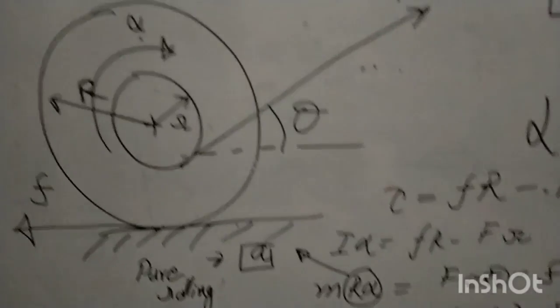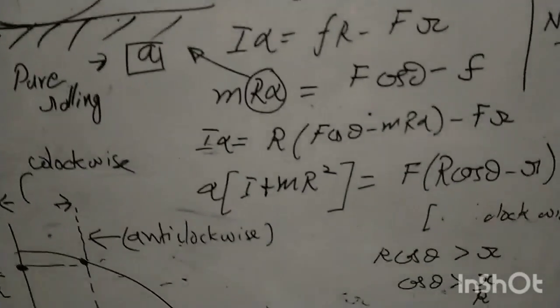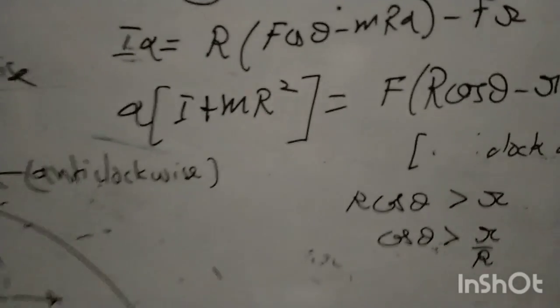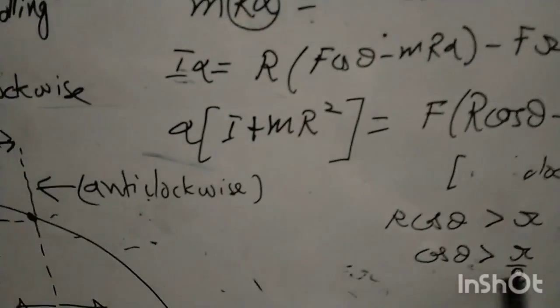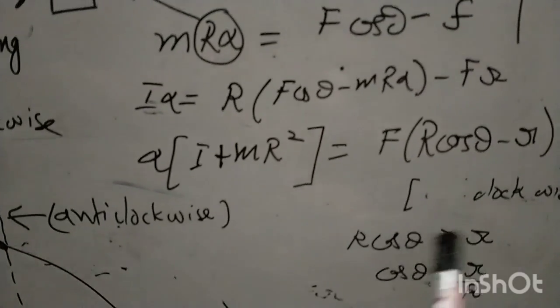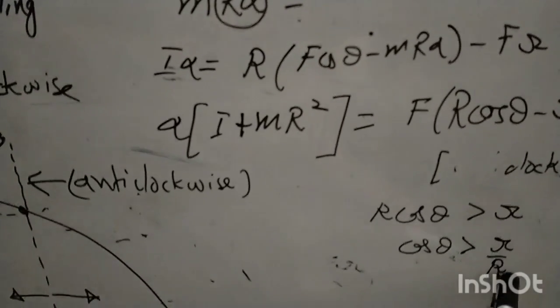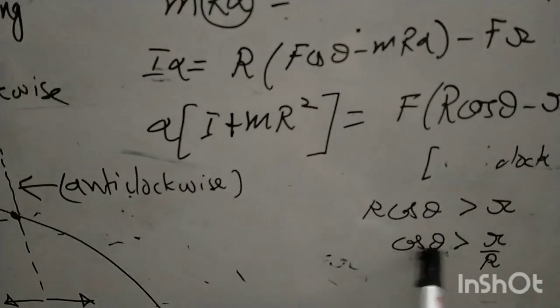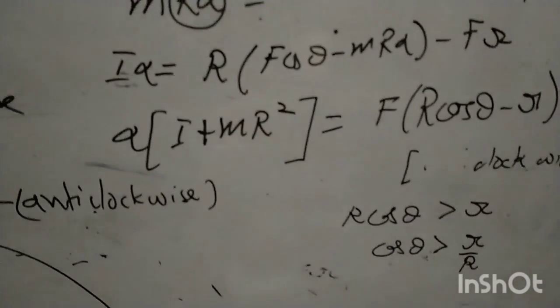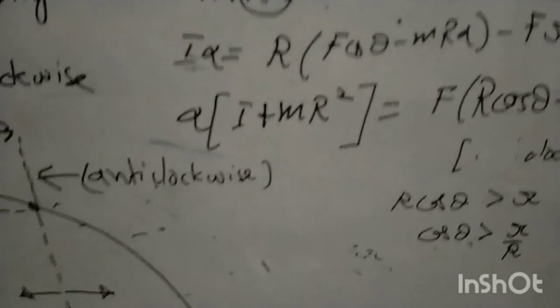These are the calculations for clockwise motion. The relationship we get is: if cos θ is greater than r/R, the motion is clockwise; if cos θ is less than r/R, the motion is anti-clockwise; and if cos θ equals r/R, that defines theta critical. Now let me show a very interesting graphical interpretation.